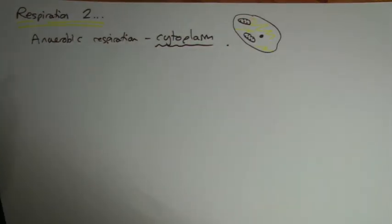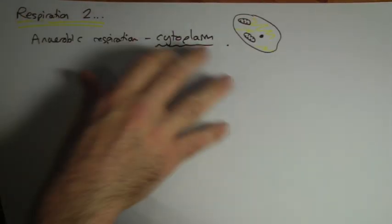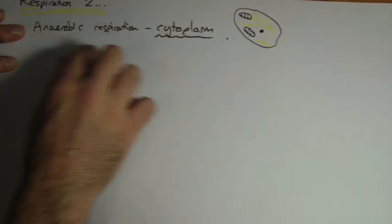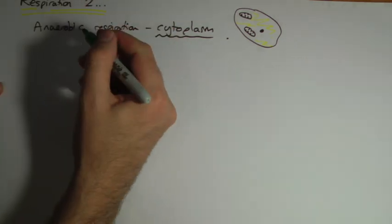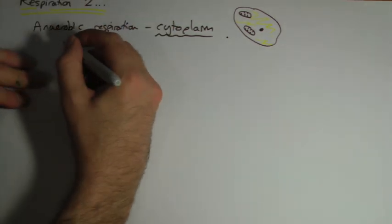And anaerobic respiration occurs in the cytoplasm of cells, a pretty common question to be asked. There are two versions of this you'd need to know. The first version is what occurs in mammals, such as us.